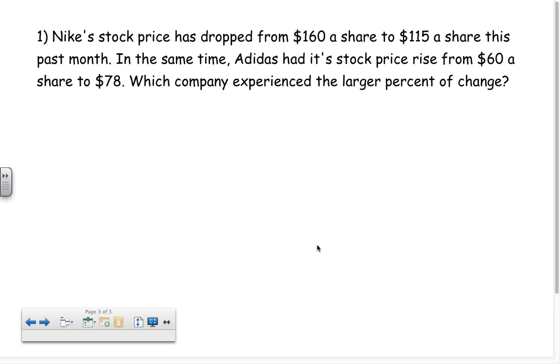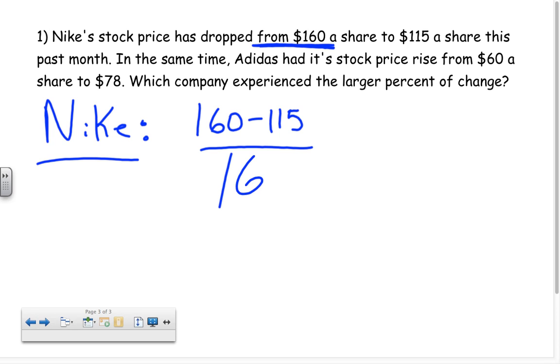We're going to figure out which of these two companies had the larger percent of change. So Nike, let's start with Nike. We'll do Nike in blue. The difference between their values, or the absolute value of the difference, is 160 minus 115. The order is not necessarily important here. Some people say original minus new value. But again, we're finding the positive, so it doesn't really matter if we write 115 minus 160 and we have the absolute value bars. It's going to convert to 45 either way. And now we're dividing it by the original. How we can identify the original is where we started from. So I began at 160, so that's my original value.